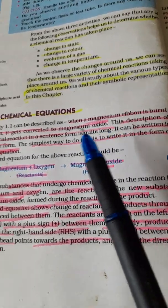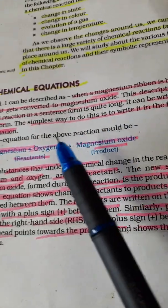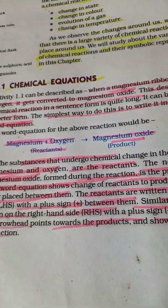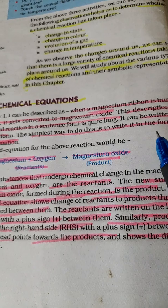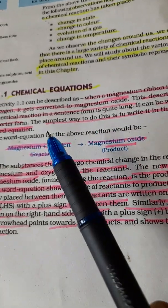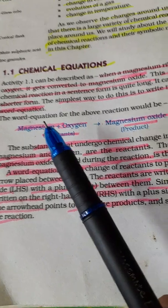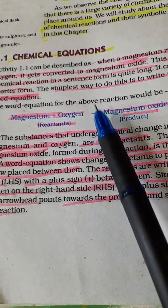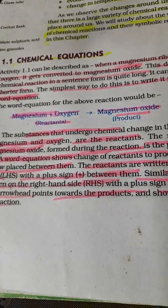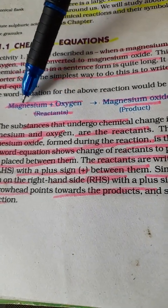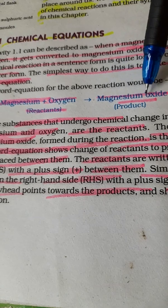When you burn magnesium ribbon in oxygen it gets converted to magnesium oxide. Normally if you say this in sentence form it is very long. You cannot say 'I burnt magnesium in air and it reacted with oxygen then I got magnesium oxide.' So you write it in short form. The simplest way is writing it in the form of a word equation: magnesium plus oxygen giving magnesium oxide.